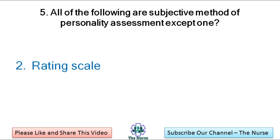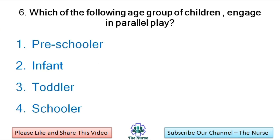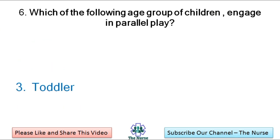Correct answer: Rating scale. Next question: Which of the following age groups of children engage in parallel play? Pre-schooler, infant, toddler, schooler. Correct answer: Toddler.